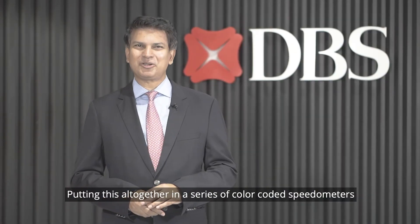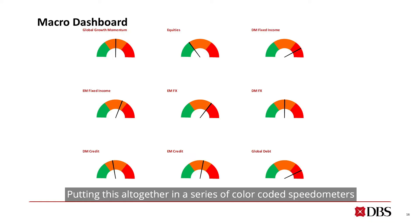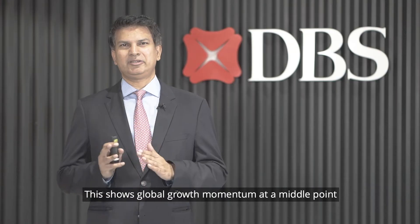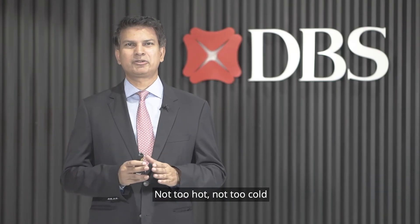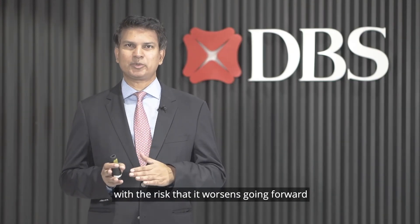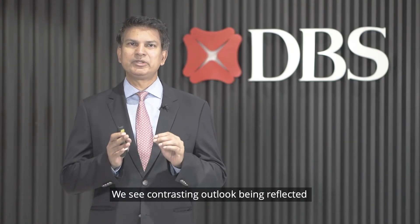Putting this all together in a series of color-coded speedometers, we present our overall dashboard scores. This shows global growth momentum at a middle point — not too hot, not too cold — with the risk that it worsens going forward.